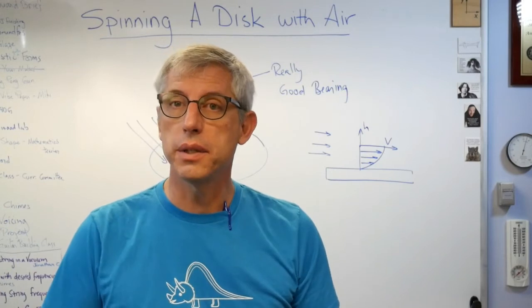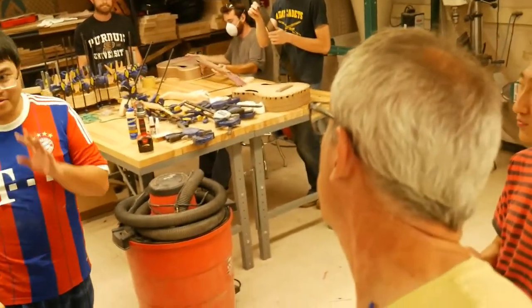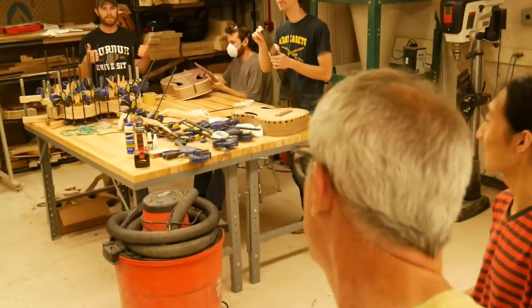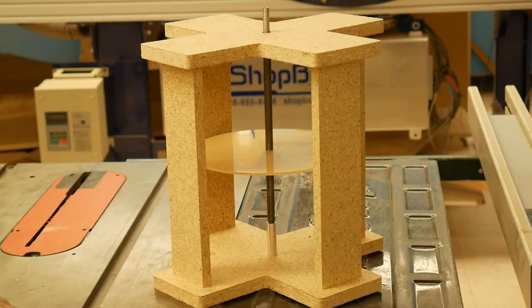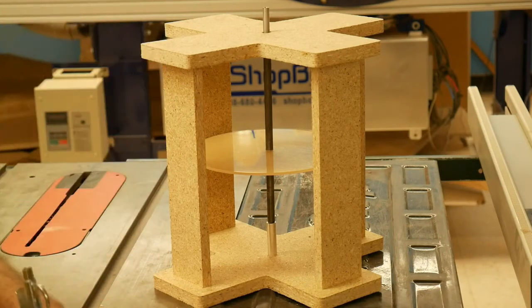This is velocity going that direction and that's height going up that direction. That's the plot I'm making here. Well, since there's a change in velocity there, there must be shear forces, and if there are shear forces the disk is going to spin.